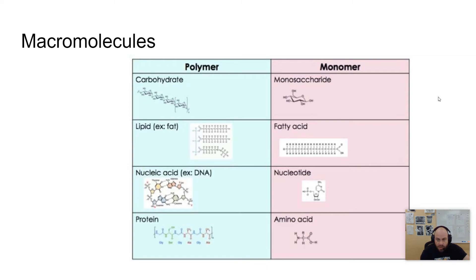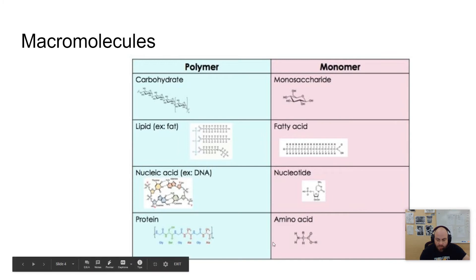For carbohydrates, the monomer is called a monosaccharide, so sometimes you'll see a carbohydrate called a polysaccharide, which makes sense. The monomers of lipids are called fatty acids. Lipids are a bit different in that they don't fit the traditional polymer concept, but we'll still consider them in the same vein. A fatty acid is just a long chain of carbons and hydrogens. The monomer of a nucleic acid is called a nucleotide, and for proteins the monomer is called an amino acid. Sometimes proteins are referred to as polypeptides, which relates to the name of the bond between amino acids.